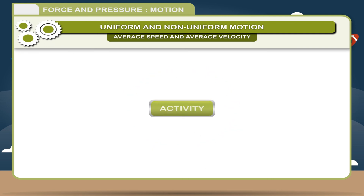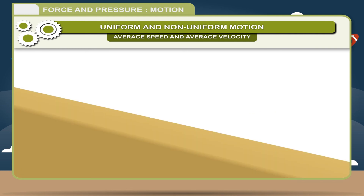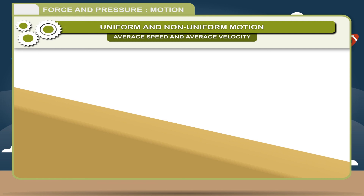Activity: to show the motion of a ball on an inclined plane. The direction of motion of a ball on an inclined plane does not change, but it covers unequal distances in equal intervals of time.